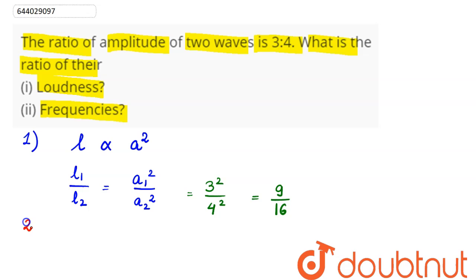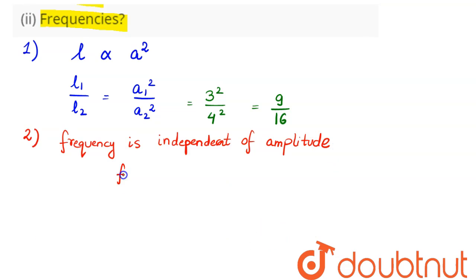Next, ratio of their frequencies. Now we know here that frequency is independent of the amplitude. Frequency can be related as v equals f lambda. So here frequency